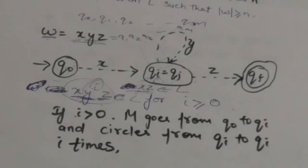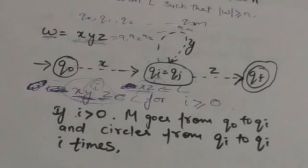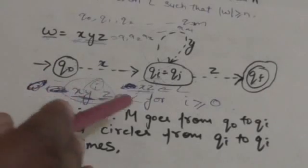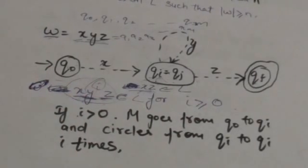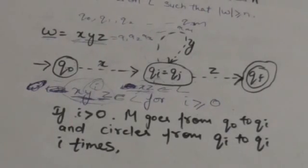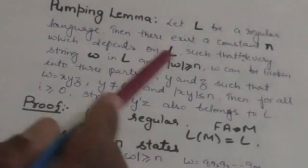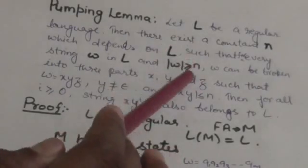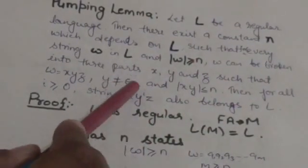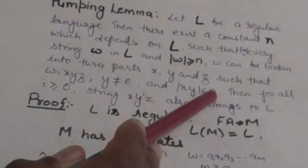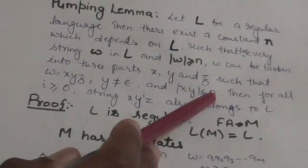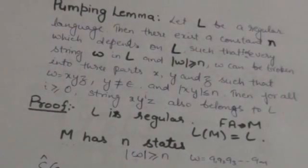So we have proved the Pumping Lemma: if xyz is a string of language L, then x y^i z for all values of i greater than or equal to zero also belongs to language L, where the length of xyz is greater than or equal to n, y is not equal to the empty string, and the length of xy is less than or equal to n, where n is a constant which depends on language L.